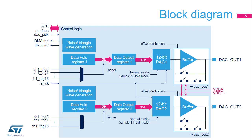DAC output channels are buffered or non-buffered. The sample and hold block uses LSI, or Low-Speed Internal Oscillator clock source, and is operational in stop mode for static conversions. The content of the data hold registers is transferred to the corresponding data output register when a trigger condition is detected, including software triggers. Then the content of the data output register is transferred to the converter. The output buffer has a mechanism to calibrate the voltage offset.